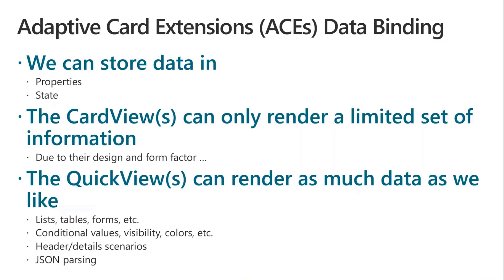In quick views we can format content and data with many options based on the adaptive card schema syntax. For example, we can create lists, tables, interactive forms, conditional formatting, change colors, visibility, play with headers and details, and even do JSON parsing. I'm going to share some practical options so you can learn how to do this in your own adaptive card extensions.